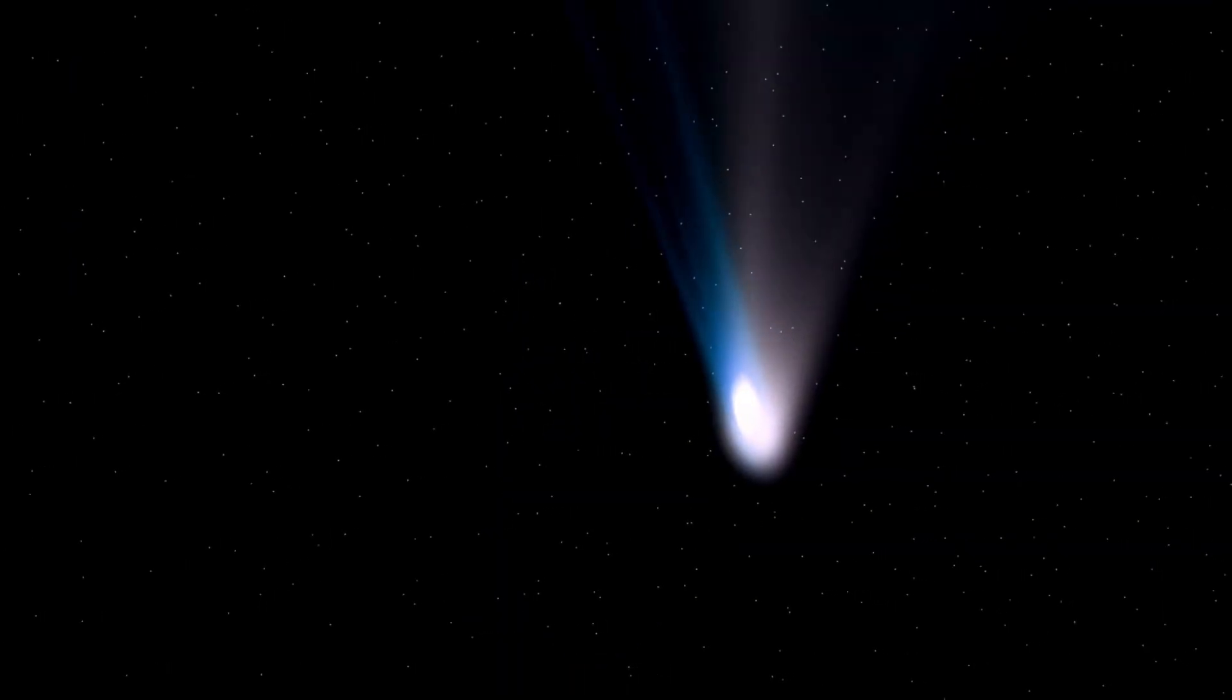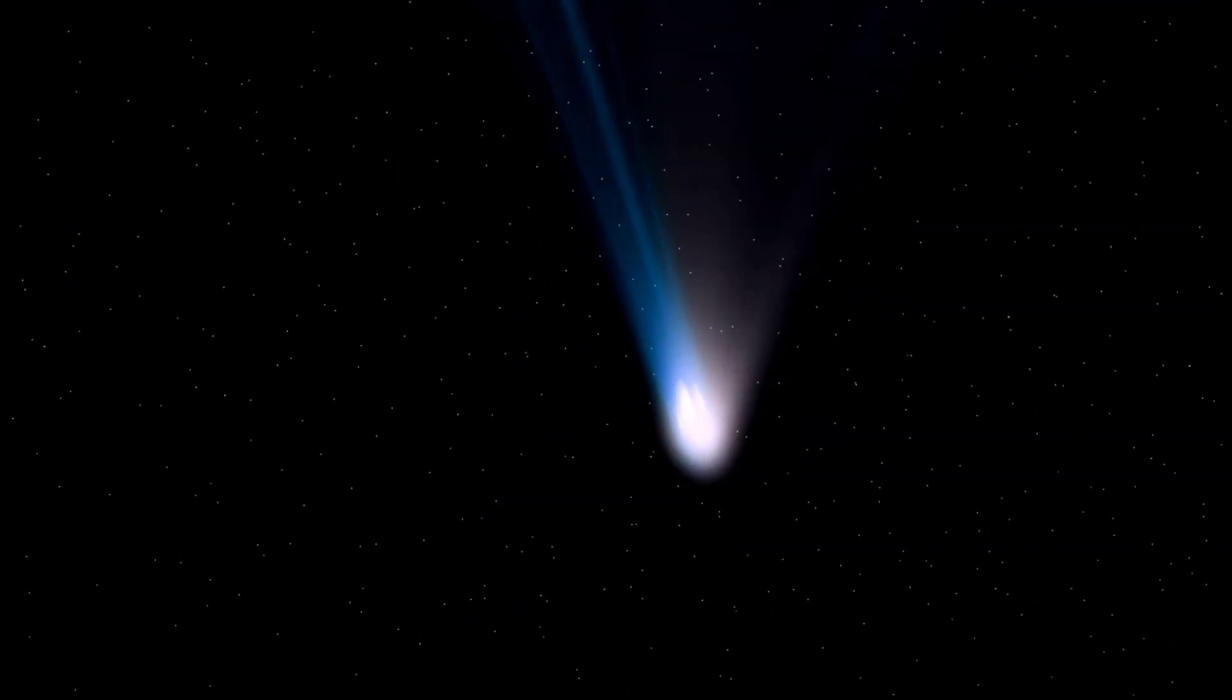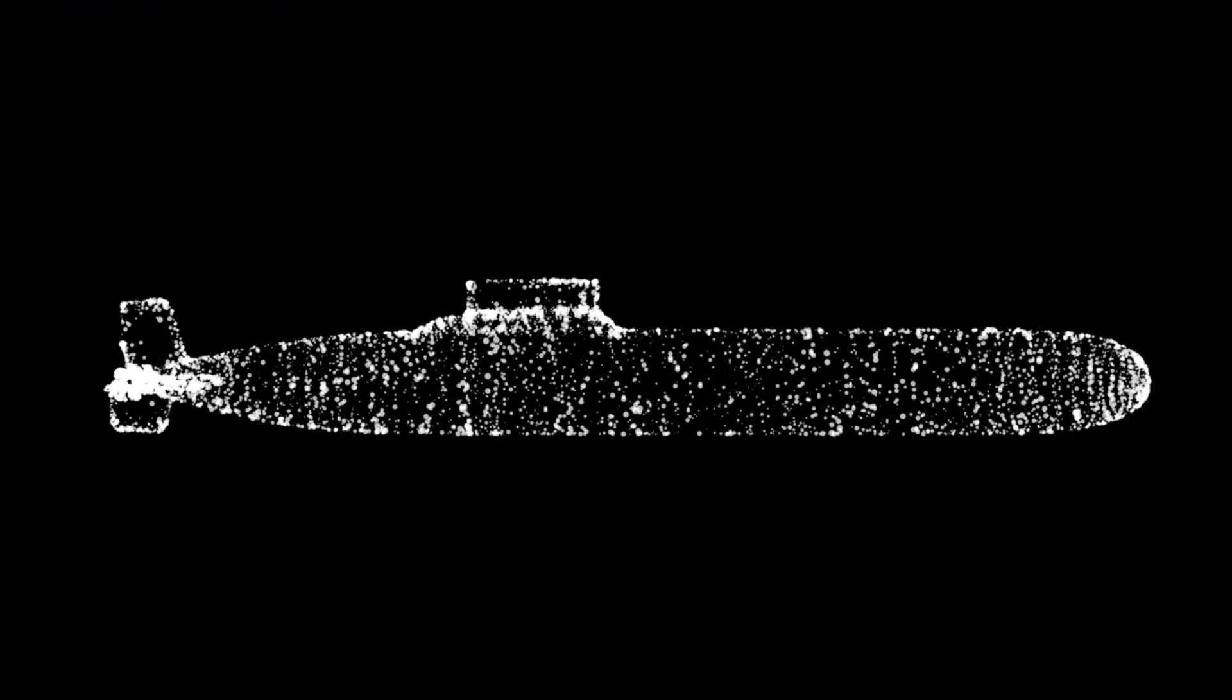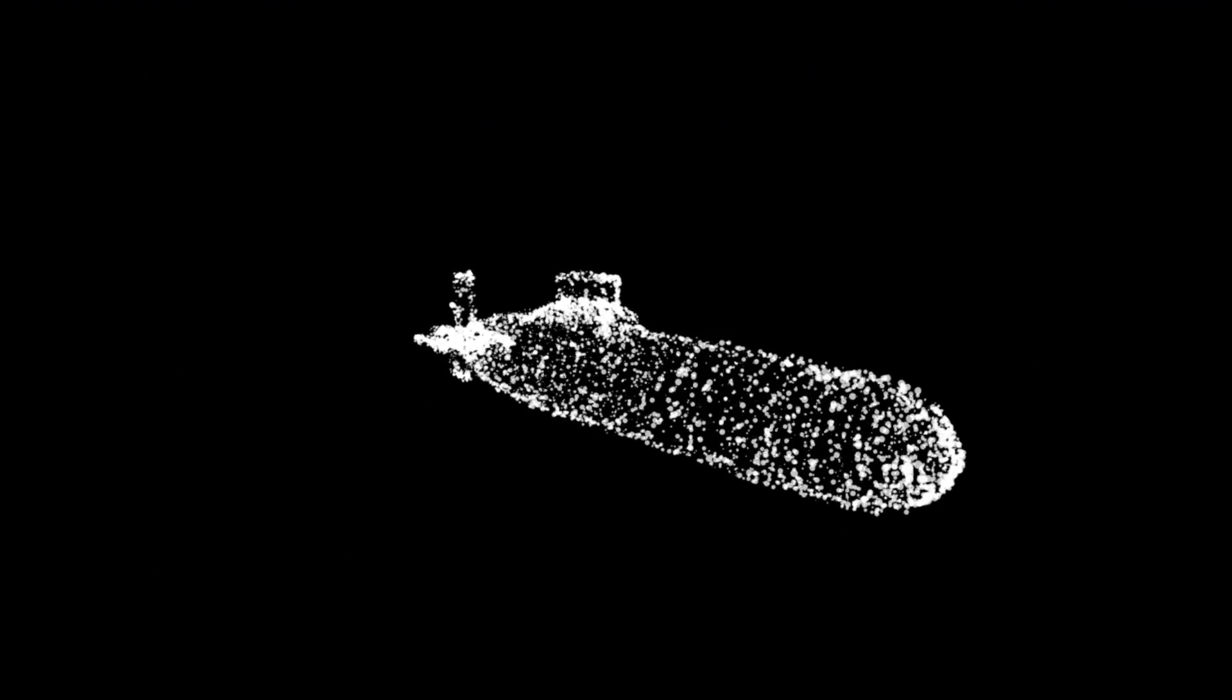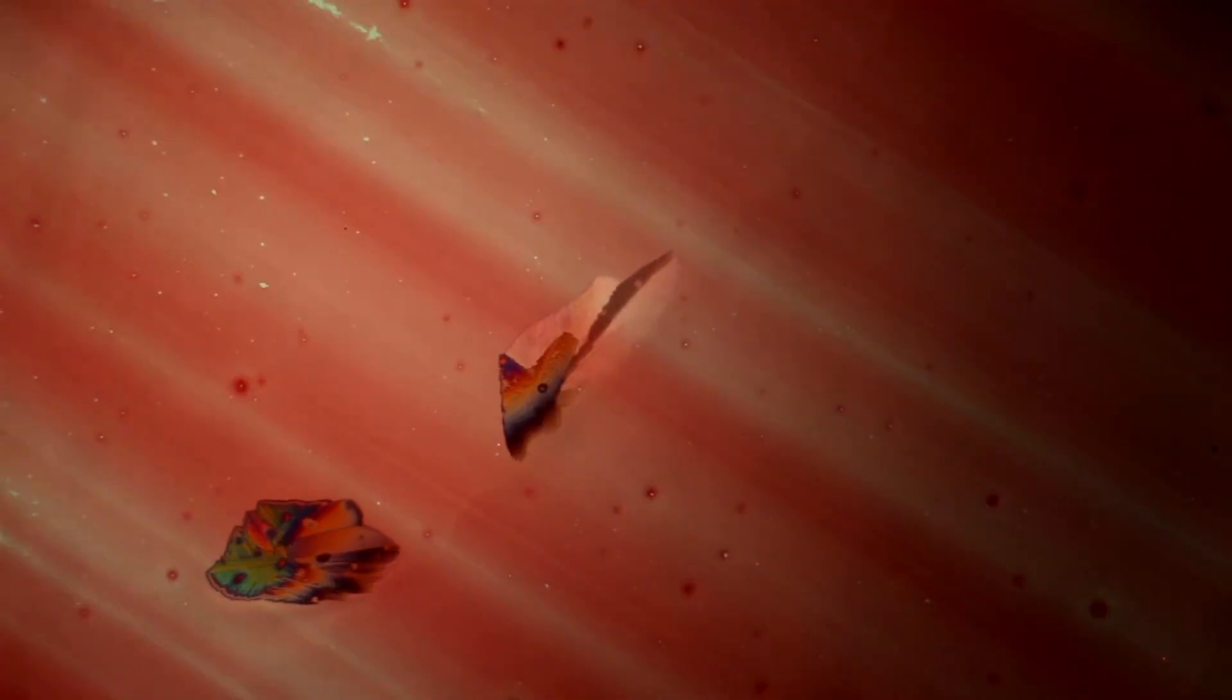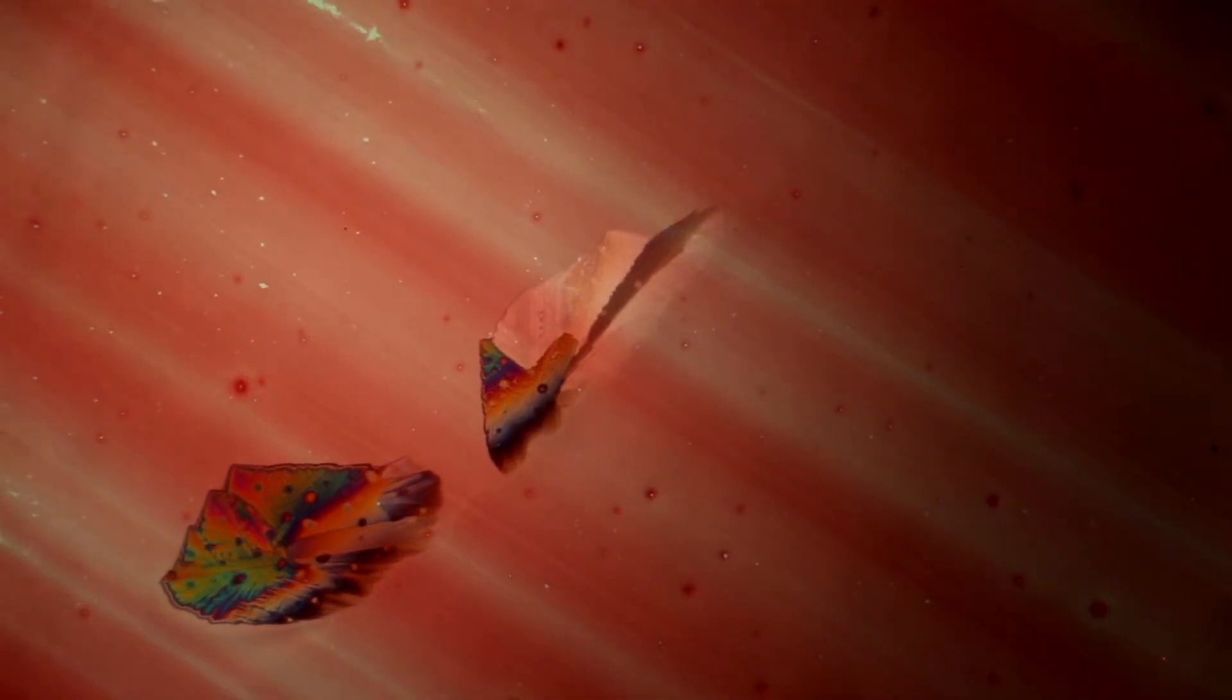This rapid rotation generates centrifugal forces that are stronger than the asteroid's gravity, causing loose material to be ejected into space. These ejections form the tails, and over time, GT will likely disintegrate entirely. Like many other asteroids and comets, GT isn't a solid rock but a fragile rubble pile held together by weak gravitational forces.